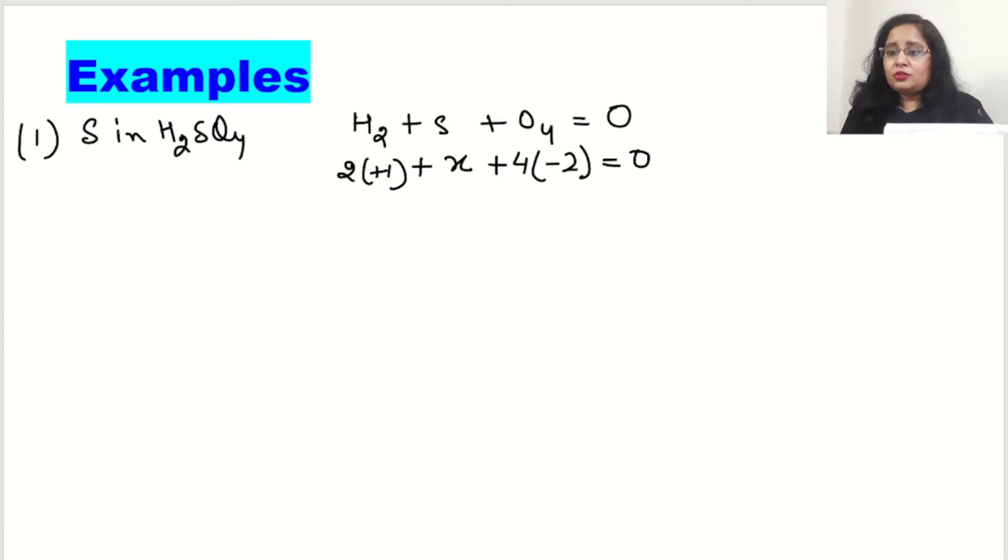So plus 2 plus x minus 8 is equal to 0. So x will be plus 8 minus 2 and x in this case is plus 6. This x is the oxidation state of sulfur. So oxidation state of sulfur in H2SO4 is plus 6.